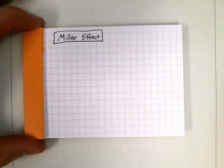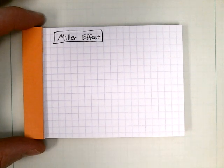Short video on what's up with Miller Effect. How did I come up with that magic number to deal with the feedback resistor?